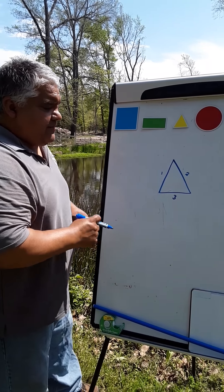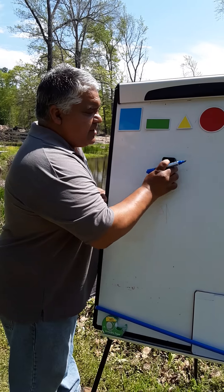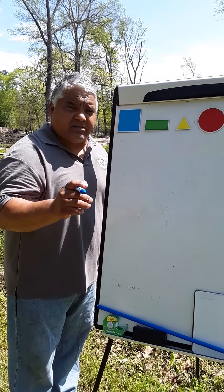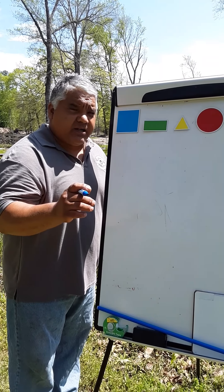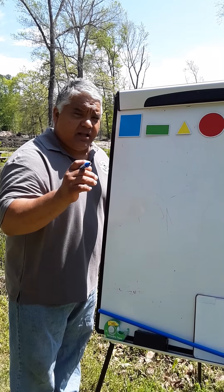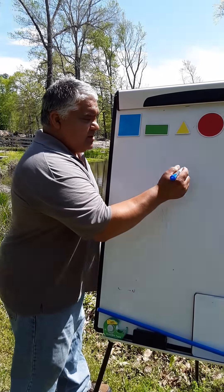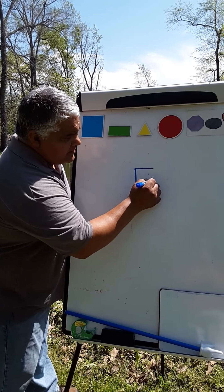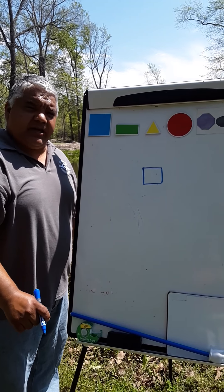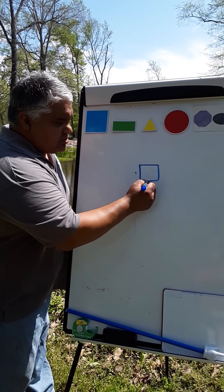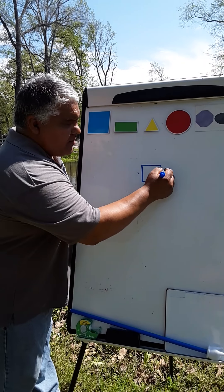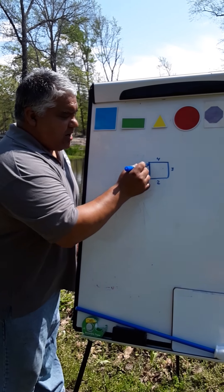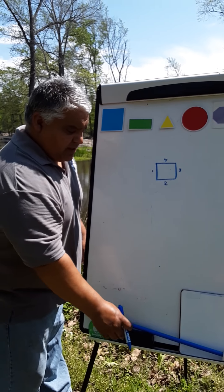The next shape: which shape has four sides and four vertices of equal length, or the same length? Square. It has one, two, three, four sides and four vertices: one, two, three, four. That is a square.